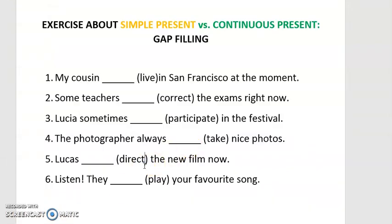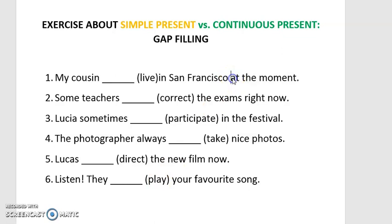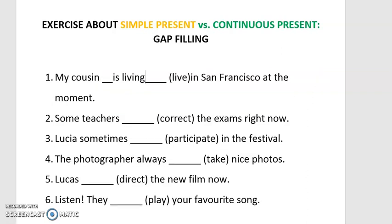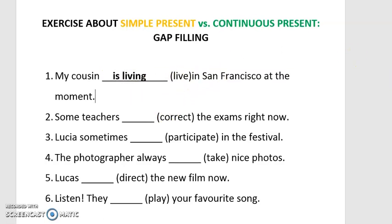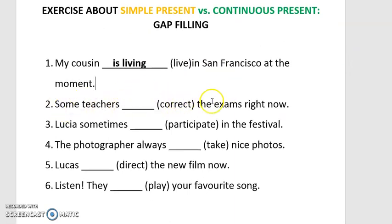Now let's analyze an exercise about simple present versus continuous present — a gap-filling exercise. We have sentences where we don't know whether to use simple present or continuous present, so it's important to identify the time expressions. First sentence: 'My cousin __ in San Francisco at the moment.' The key expression is 'at the moment,' which tells us this is a continuous tense. The answer is 'is living' — 'My cousin is living in San Francisco at the moment.'